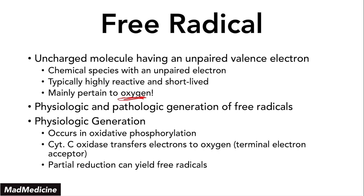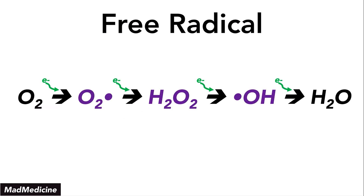You can also see a physiologic — or even pathologic — response in the body when you're trying to fight off an infection. Free radicals have to do with oxygen. The way they function is that at every step, you are going to get a new electron. The first electron that an oxygen molecule actually accepts will create something called superoxide.